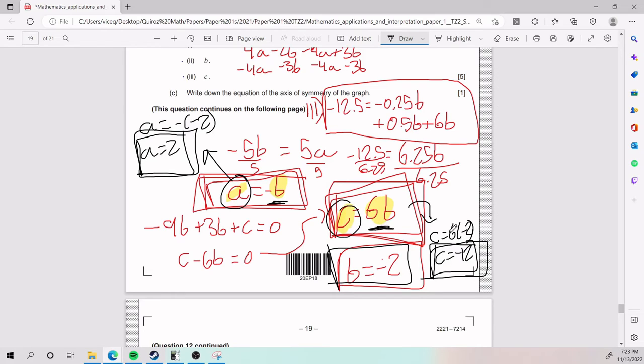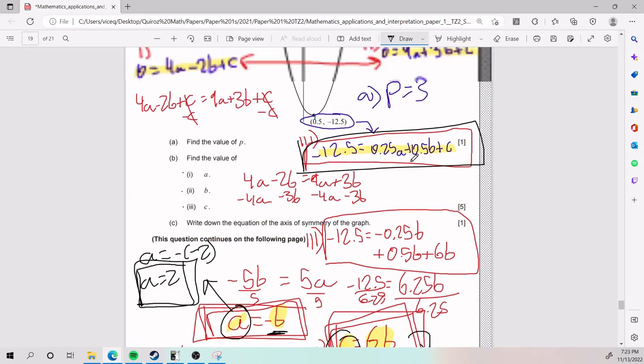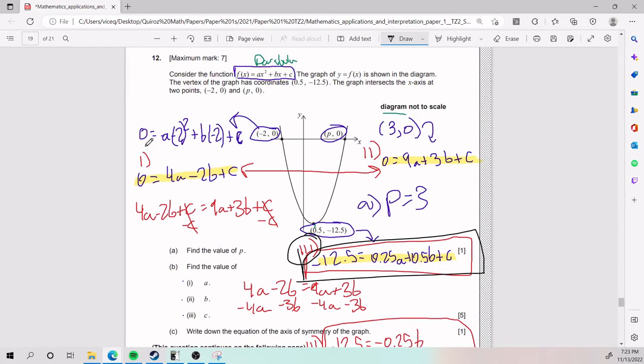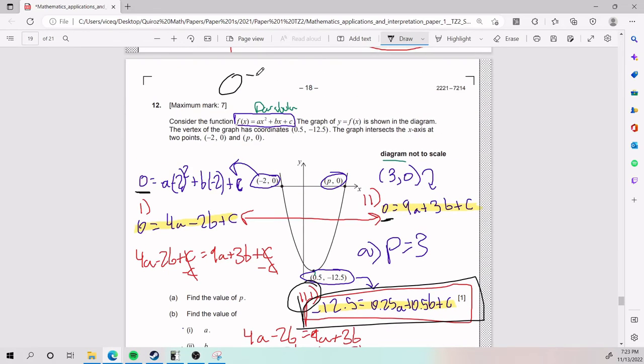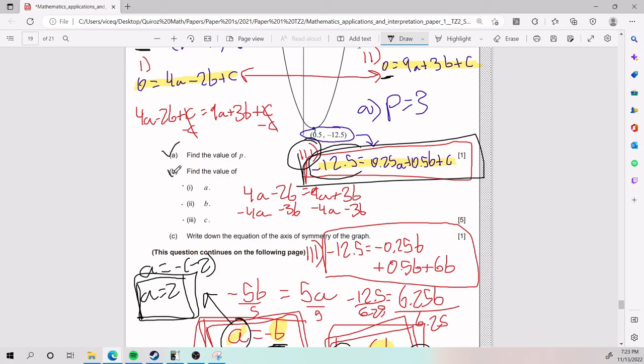Once they are all in the b way, you plug it into one of them and boom, you get an actual value. Why did I plug it into the third one specifically? Because the other two had an equal 0. And so I would have ended up with 0 equals a bunch of b's. And I can't really get an actual b value from there. The only actual b value you can get is if I plug it into the third one because the third one has a negative 12.5 on the sides. Something you can actually play with. Anyways, that is part b.